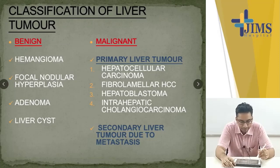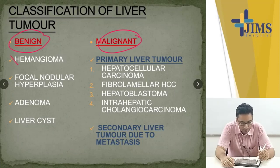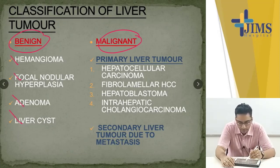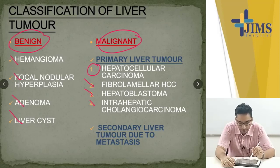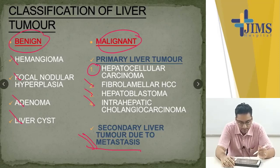Classification of liver tumors: firstly there is benign and malignant. Benign tumors include hemangioma, focal nodular hyperplasia, adenoma, and liver cyst. Malignant primary liver tumors — most important is hepatocellular carcinoma. Other common primary liver tumors are fibrolamellar HCC, hepatoblastoma and intrahepatic cholangiocarcinoma, and the rest are metastases.